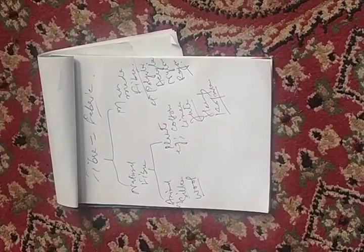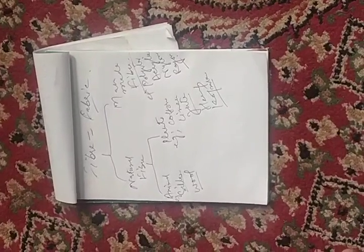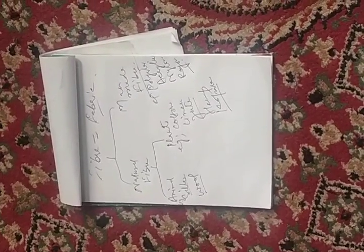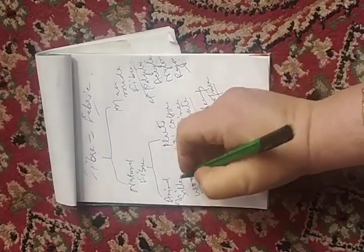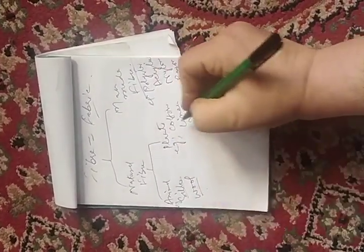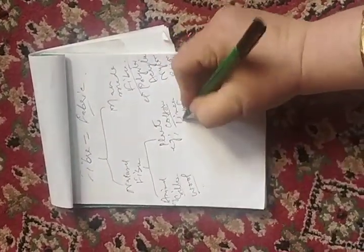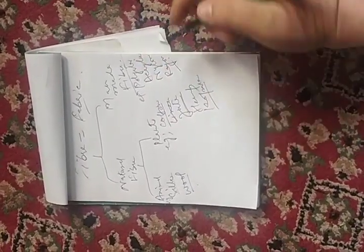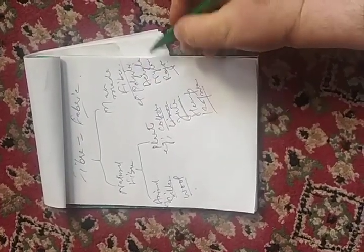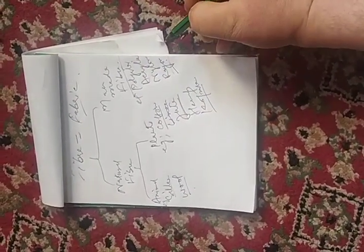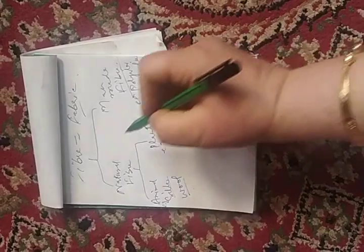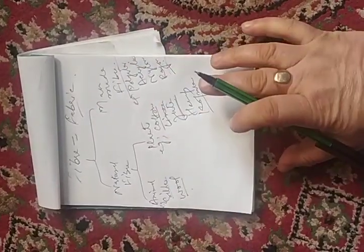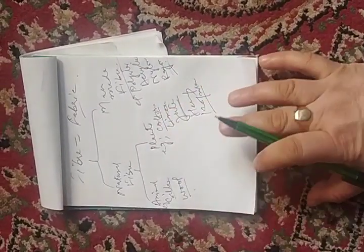We obtain natural fiber from animals and plants. Animals give us silk and wool, and plants provide us cotton, linen, and jute. Man-made fibers include polyester, acrylic, nylon, and rayon. This was about fiber and where we get it from.